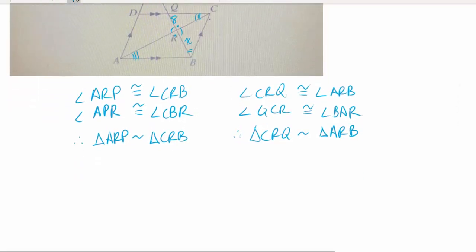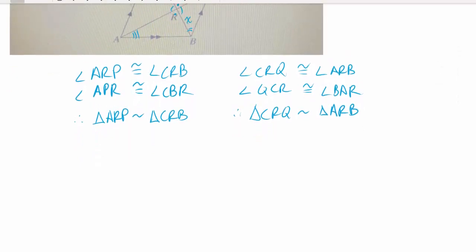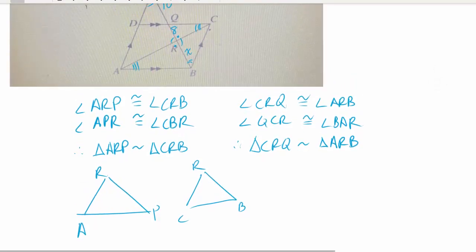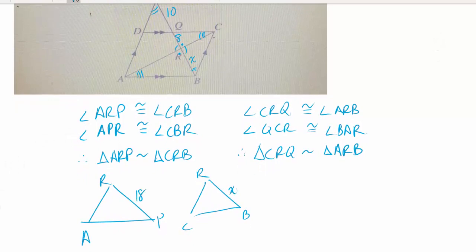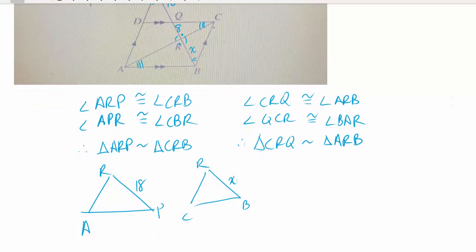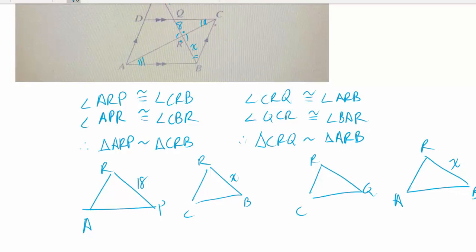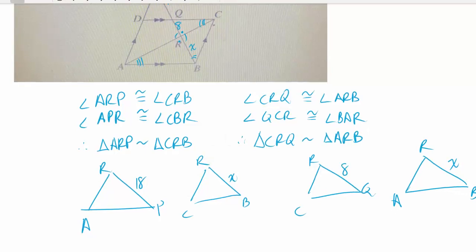So two sets of similar triangles. And what I'm going to do is draw those triangles down here. I'm not going to worry about drawing them to scale. I'm just going to draw ARP and CRB. With those first two, we know that RB is what we're looking for, what I've called X, right? And RP is the 10 plus 8, so that's 18. So that's all we know about those two triangles. And then let's look at CRQ and triangle ARB. Once again, RB is the side we're looking for. And RQ is our 8th length segment.